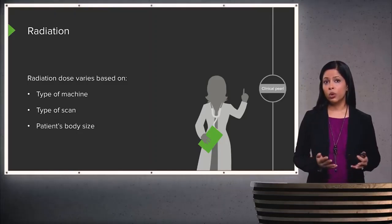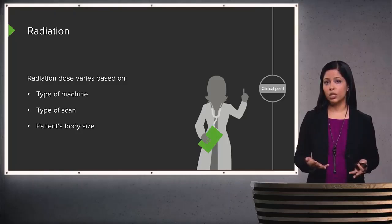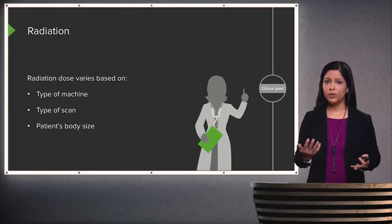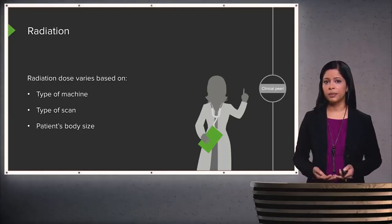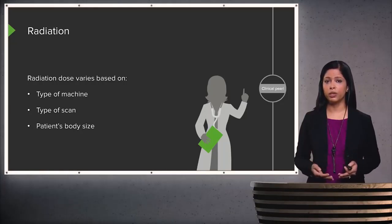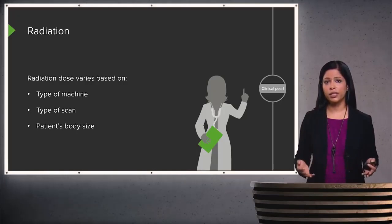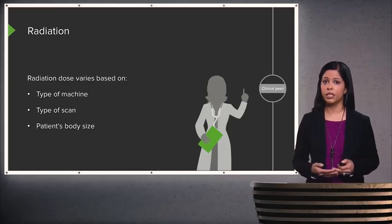Some older machines actually administer more radiation than newer machines. Head CT scans, for example, will have less radiation than an abdominal CT scan just because the area being scanned is smaller in size. A patient's body habitus can also change the amount of radiation administered — patients that are larger in size need more radiation to penetrate the body tissue.